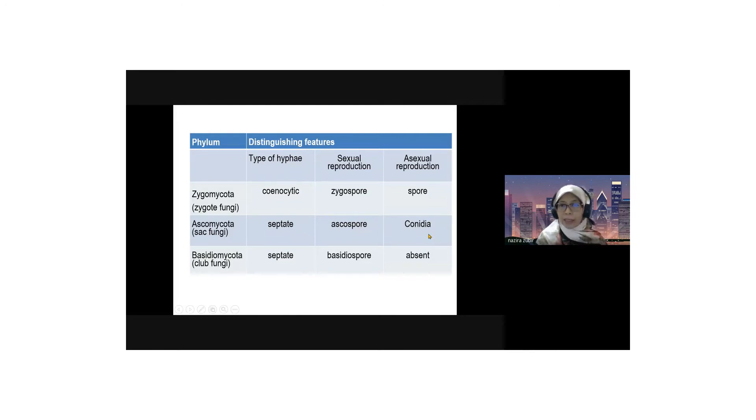Example, Penicillium ataupun penicillin, one type of antibiotics discovered by Alexander Fleming, okay. This cornidia is asexual reproduction, it is located at the tips of cornidiophore, the stalk-like structure, okay. The last phylum is Basidiomycota.